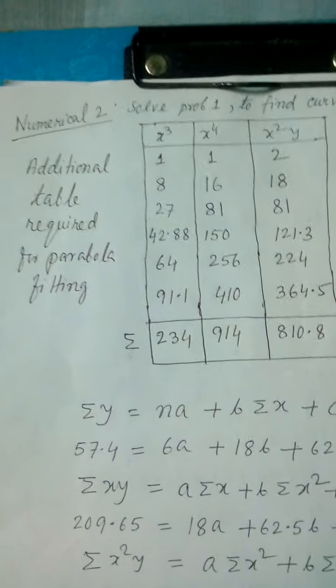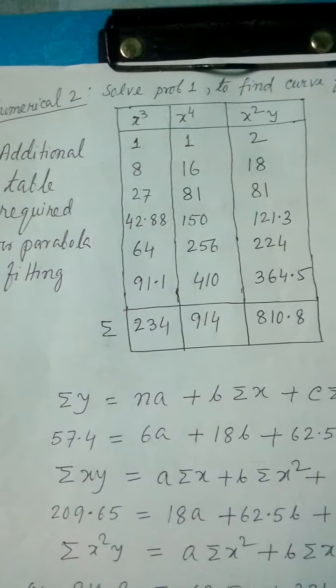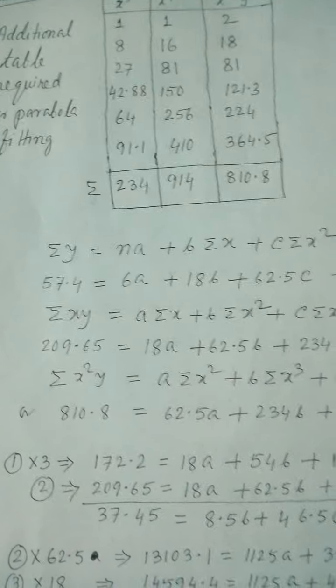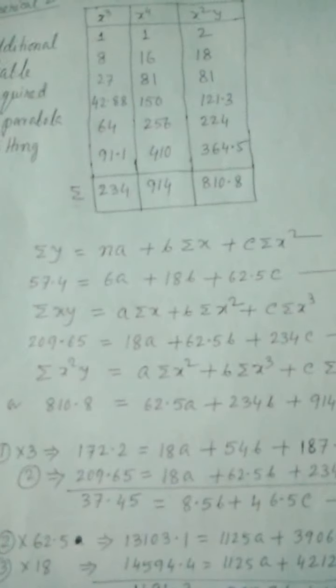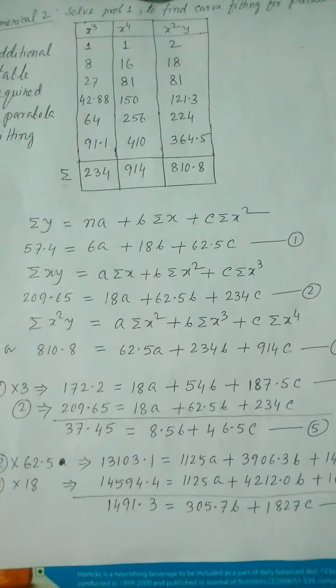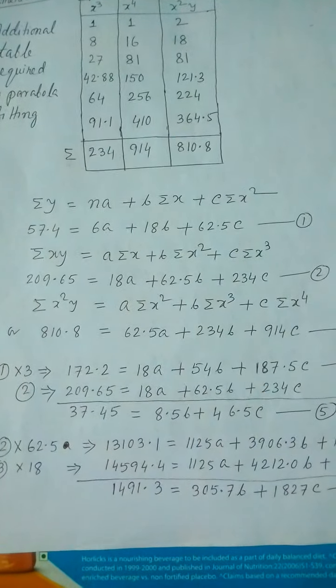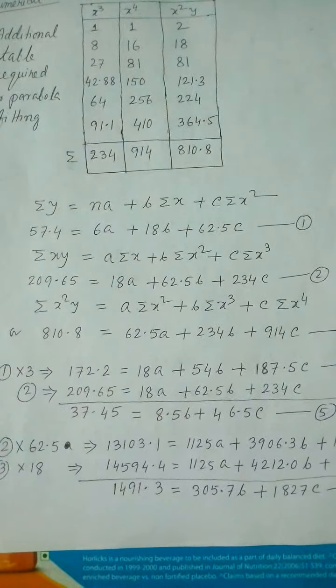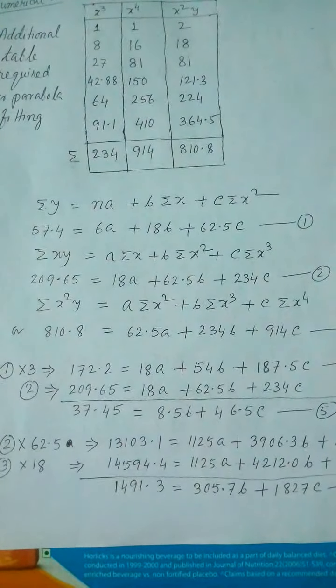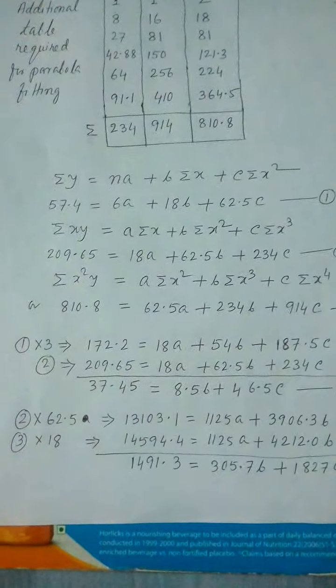Let me show you the table and this is the equation. Three equations and three unknowns - A, B, C - you can find out easily. These are linear equations, so no problem, you can solve it easily.